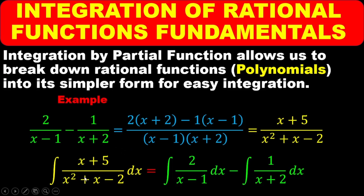In order to break this down into partial fraction form, first you need to factorize the quadratic in the denominator. So x squared plus x minus 2, when you factorize, gives (x minus 1)(x plus 2). The question then remains: how do I get these two constants? And so that is why we are treating this topic. Let's go to the next stage and see how easy it is to determine that.